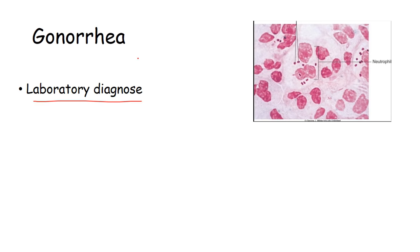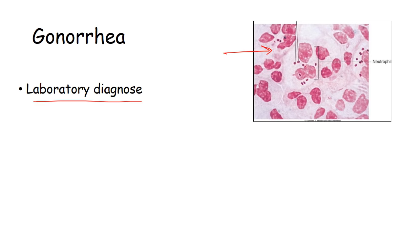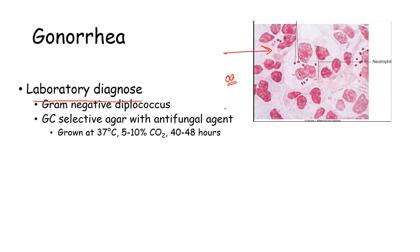For laboratory diagnosis, gonorrhea can be found under microscopy. Neisseria gonorrhoeae are cocci generally present as two cocci at a time — they are gram-negative diplococci. Neutrophils are much bigger, and the bacteria may sometimes enter inside neutrophils. They can be grown on selective agar with an antifungal agent at 37°C with 5–10% CO2 for 40 to 48 hours, requiring a carbon dioxide-enriched, low-oxygen environment.